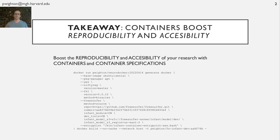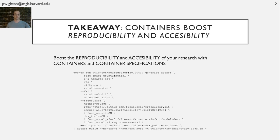But the takeaway is this: publishing a concise description of your computational environment, similar to the one seen here, is probably one of the best things you can do to increase the reproducibility of your work. And descriptions like this one are concise enough to fit into the appendix of most publications.